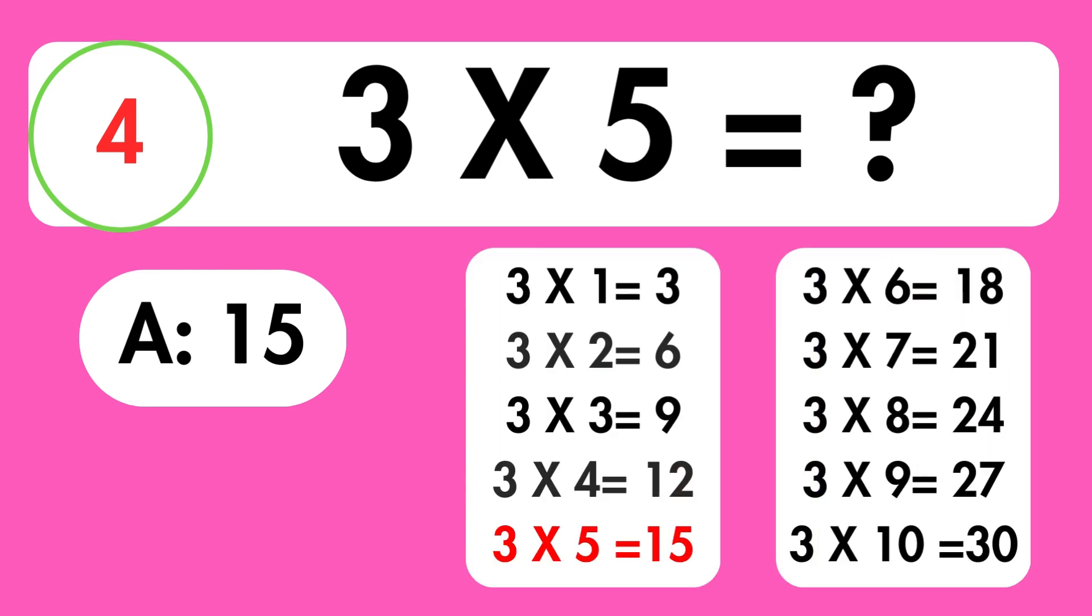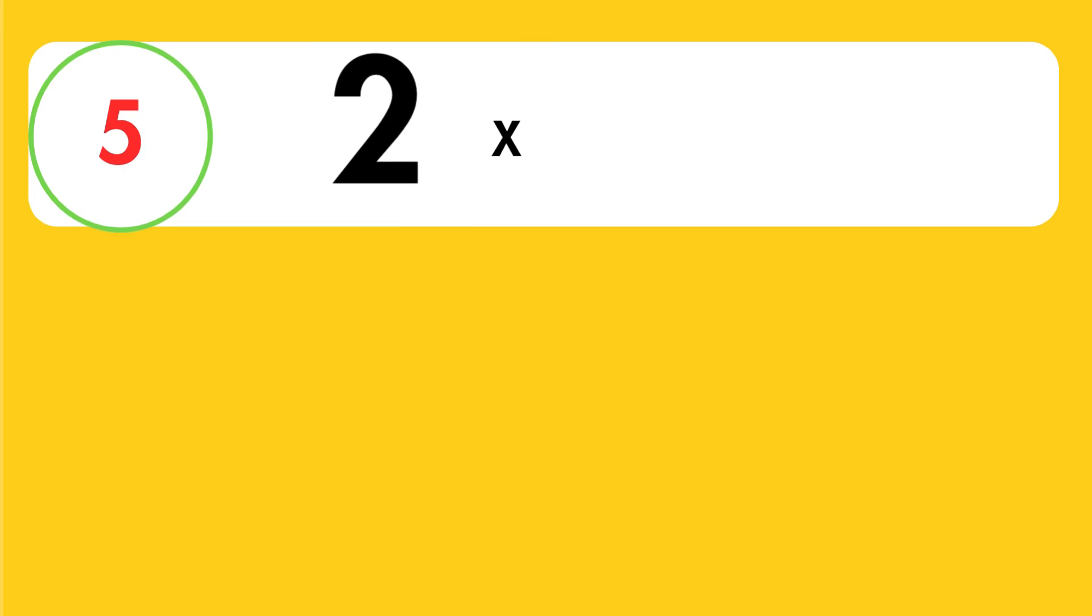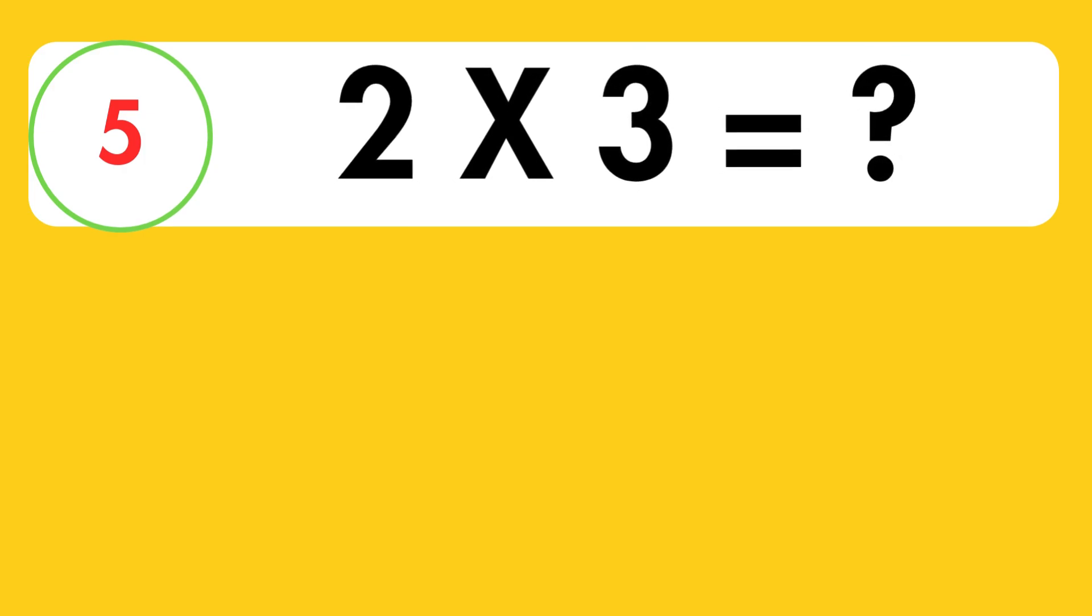3 multiplied by 5 is equal to 15. Question 5. What is 2 times 3 equals?